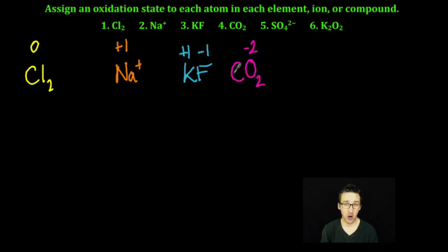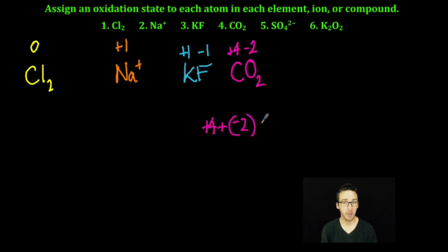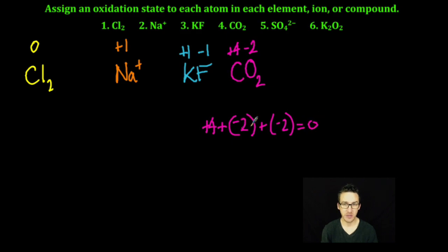Then we come to carbon. Carbon must have an oxidation number of plus four, so that when I sum together plus four plus negative two plus negative two, I get zero. The reason I'm doing negative two twice is because there are two oxygens.